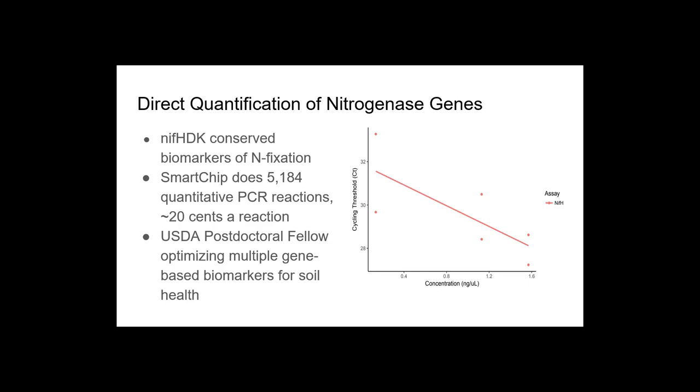But ironically, the enzyme itself is poisoned by oxygen. Both the dinitrogenase reductase portion and the dinitrogenase subunit active sites both cease functioning if they're exposed to oxygen. We can directly quantify these genes in any sample, including soils. This NIF-H, D, and K, which encodes these different subunits are highly conserved biomarkers of nitrogen fixation. A machine that I purchased when I moved here to WSU called a smart chip can do over 5000 of these quantitative PCR reactions to measure how many copies of these genes are present in a sample. I'm working with Tim Paulitz and a postdoctoral fellow funded by the USDA that's optimizing multiple different gene based biomarkers for soil health, including nitrogen fixation.